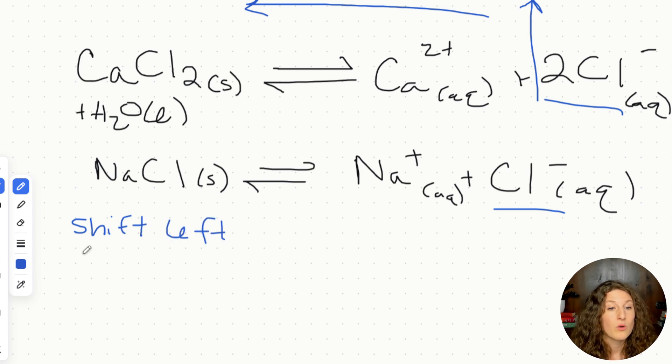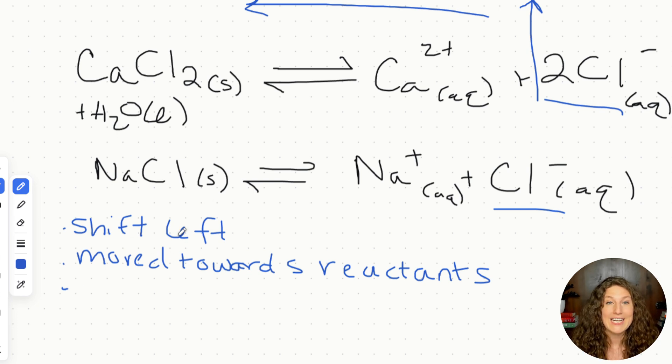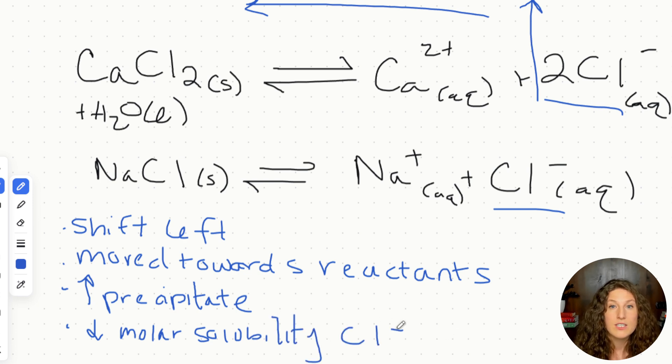Left shift. We can say that we've moved towards reactants. These are all possible answers to this question. And they say, what would happen if we added in sodium chloride? Another way we could describe this is that we've precipitated out more calcium chloride. We've created more calcium chloride solid out of this saturated solution. So we've increased precipitate. All of these are ways of describing what we've done to adjust this reaction based on this common ion. That's what the common ion effect is. The final way we could describe this is that we've decreased the molar solubility of the chloride ion. We've decreased the molar solubility of the chloride ion, driven it back to the left.